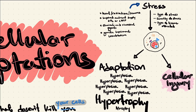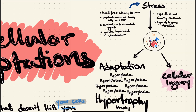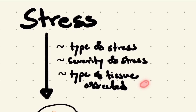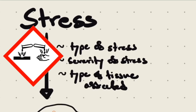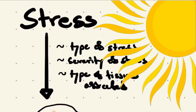What amount of stress causes our cells to adapt, and how much more stress before our cells get injured? This depends on the type of stress, the severity of the stress, and the type of tissue affected. For example, your skin cells will respond differently to your stomach lining. Your stomach will be fine with acid, but the same acid will damage your skin. Furthermore, your skin is good at dealing with sunlight, but you can still get sunburned if the sunlight exposure is too much.